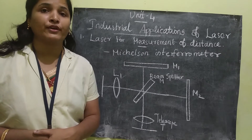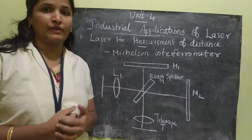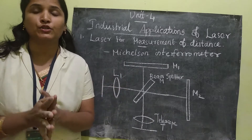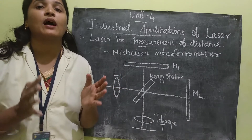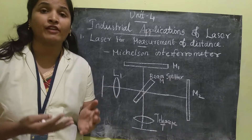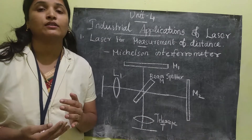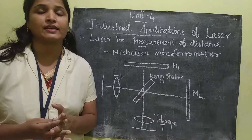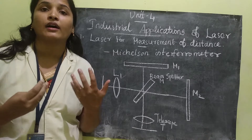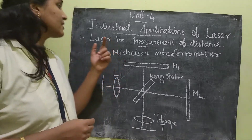Good morning students. Today I am going to teach you Unit 4, which is industrial applications of laser. Unit 4 is split into two parts. The first part is measurement — covering measurement of distance, velocity, and acceleration. The second part is fully about material processing, like material removal and material cutting using laser. Let us first see the first half, which is measurement.